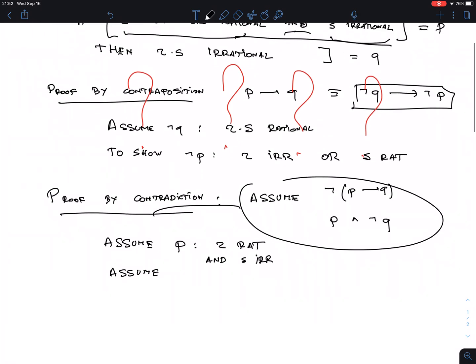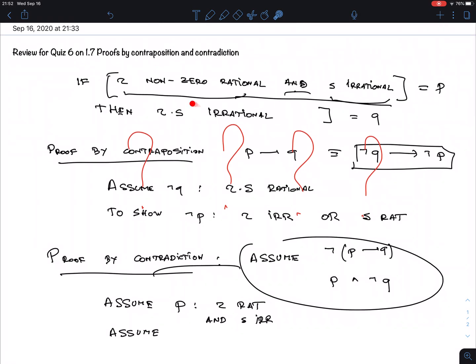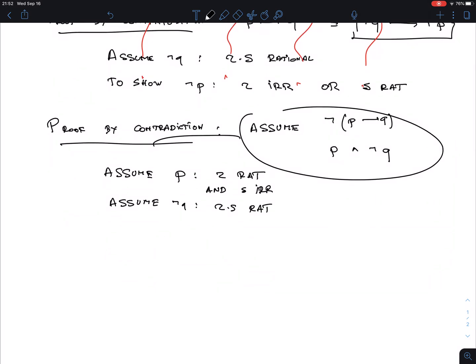And moreover, I'm also assuming not Q, that the conclusion is not true, which is also nice because it means something. Assume not Q, which means that R times S is rational. So I have now three things. Let me put all together. The three assumptions I have: R is rational, S is irrational, and R times S is rational.